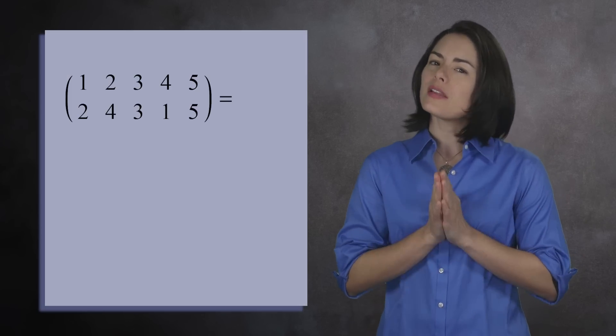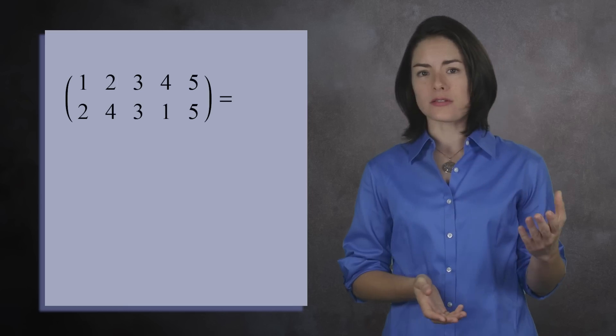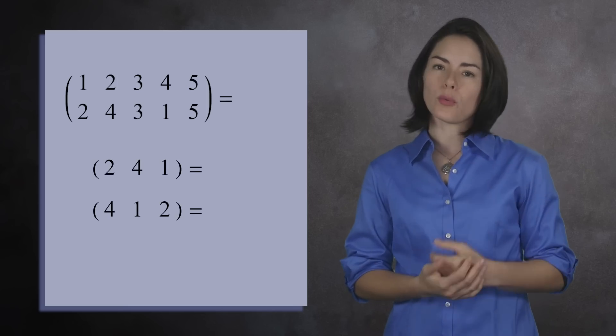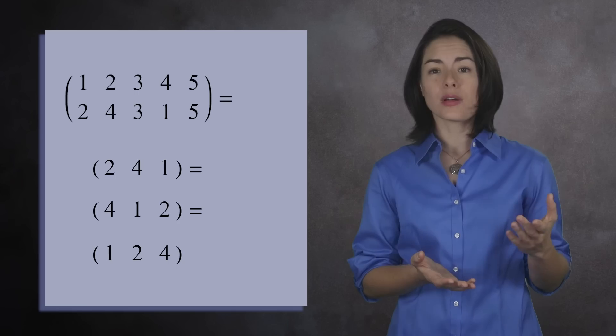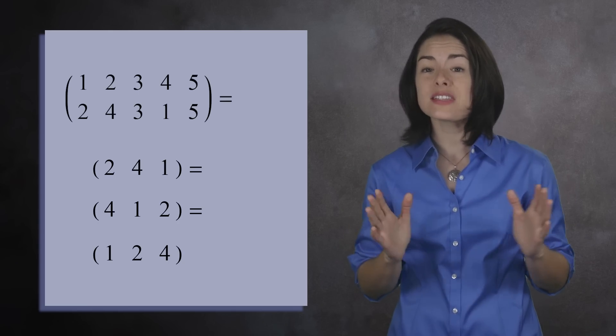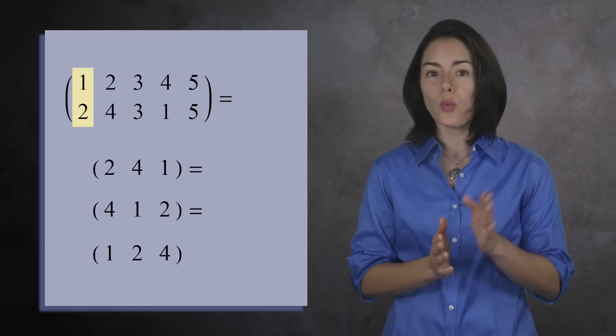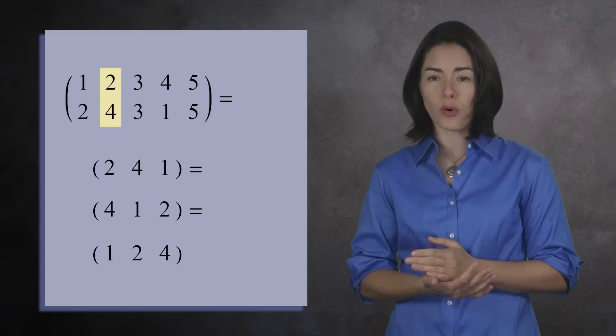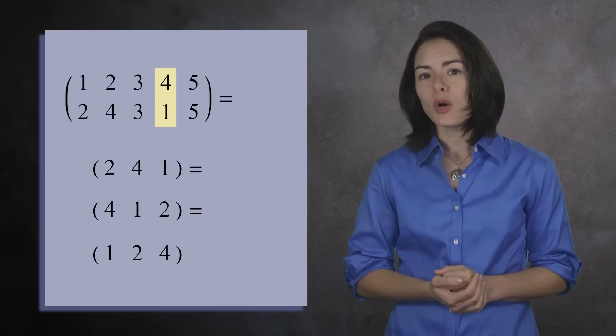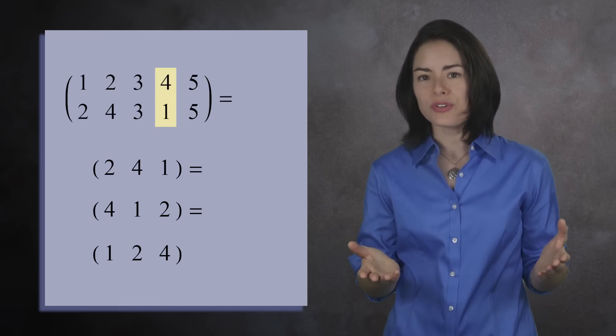This is curious. It seems you get different answers depending on which number you start with. In the last example, we got 3 different answers. 2, 4, 1. 4, 1, 2. And 1, 2, 4. But these cycles are all the same. In each cycle, 1 maps to 2, 2 maps to 4, and 4 maps to 1. We're just writing the mappings in different orders.